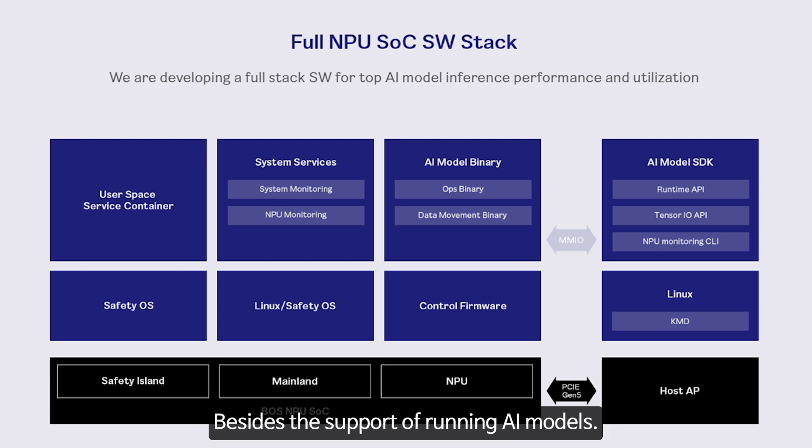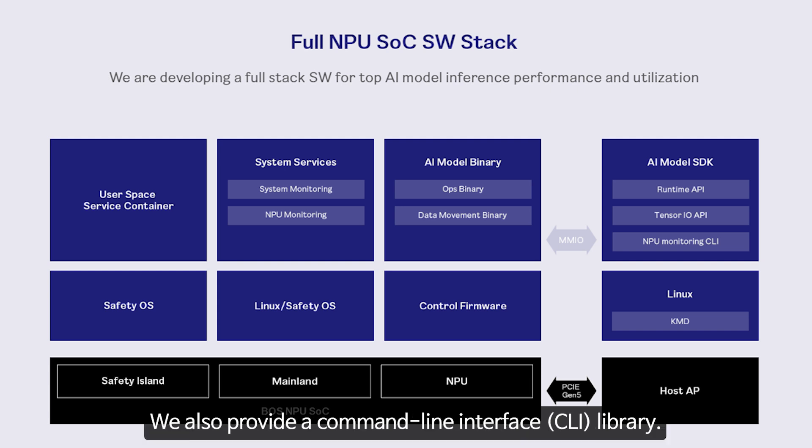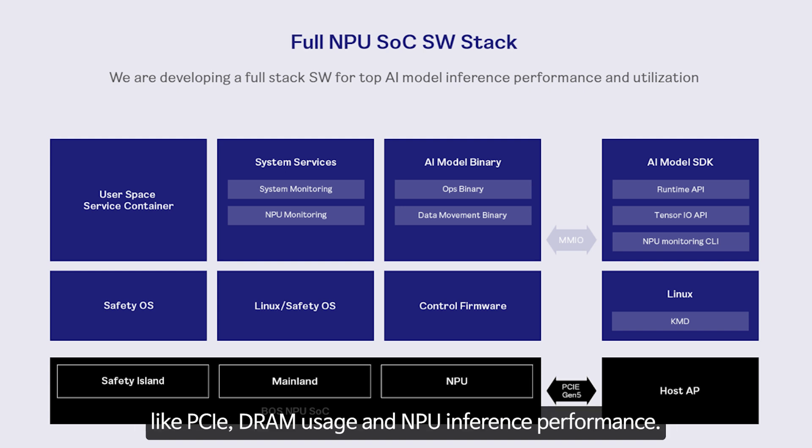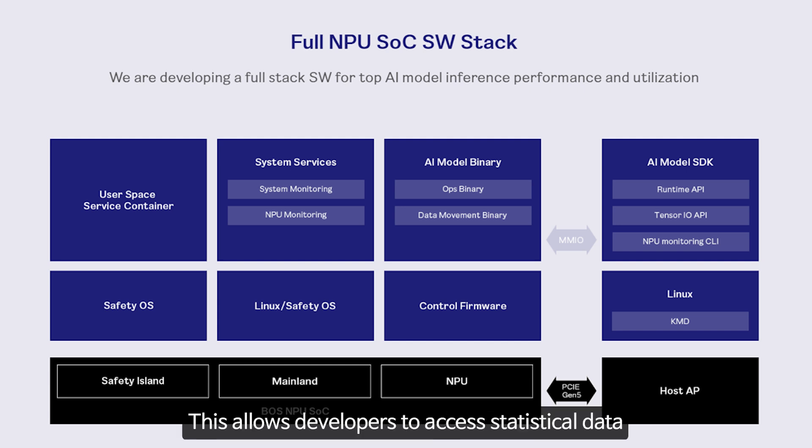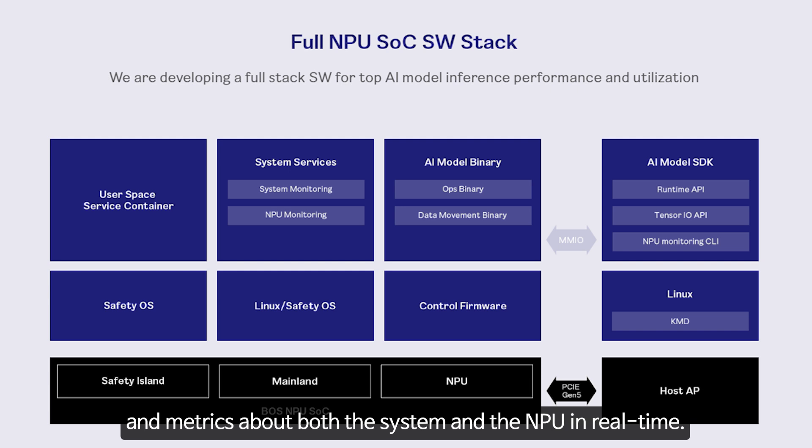All of these APIs are available in our MPU AI model SDK. Besides supporting running AI models, we also provide a command-line interface library that can be used to monitor system-level resource usage, like PCIe, DRAM usage, and MPU inference performance. This allows developers to access statistical data and metrics about both the system and MPU in real-time.